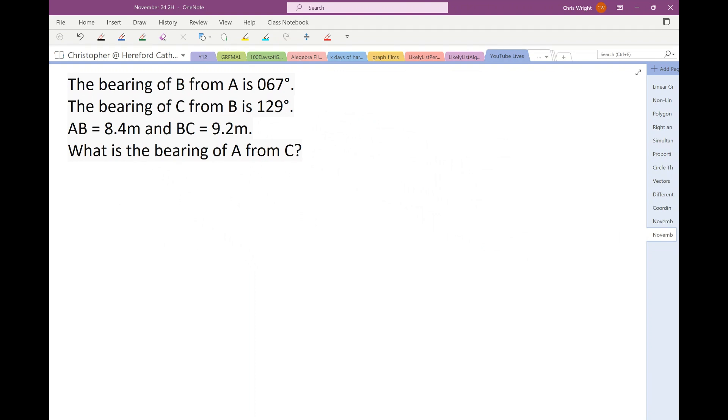Right, now, it seems to me that the trick with this question, first of all, is to draw yourself a diagram. If in doubt, sketch it out. Now, I'm told, first of all, that the bearing of B from A is 067.